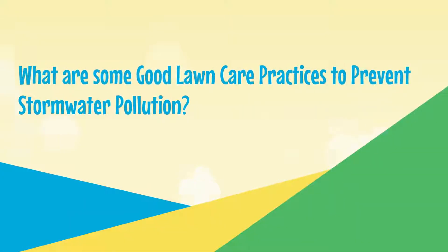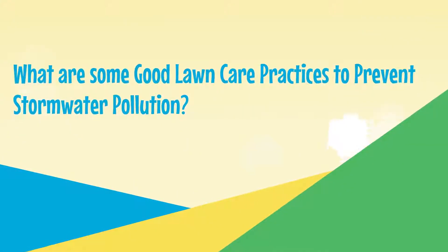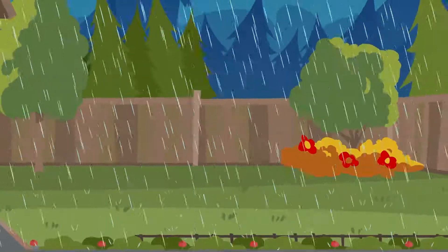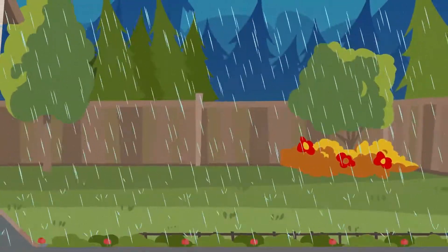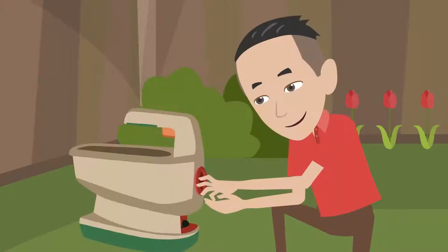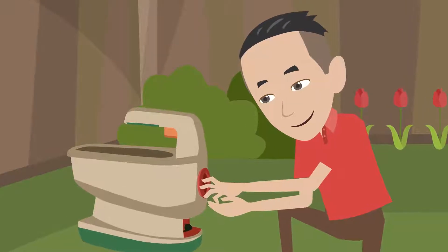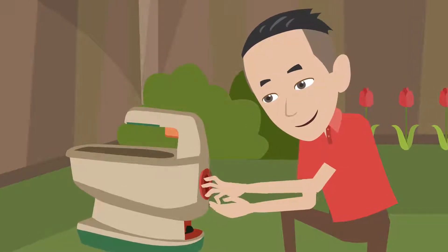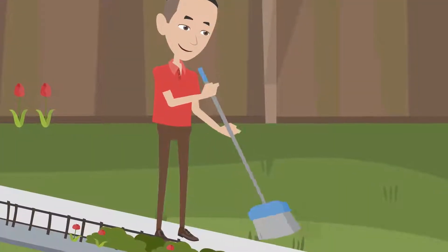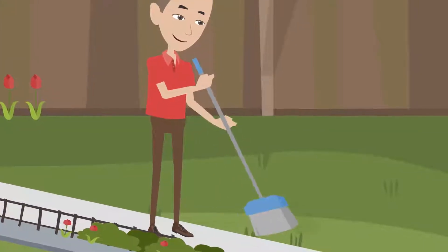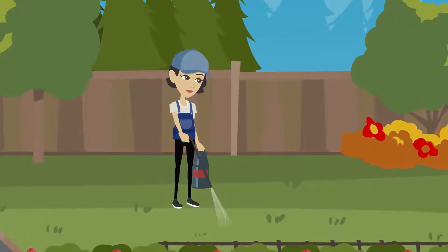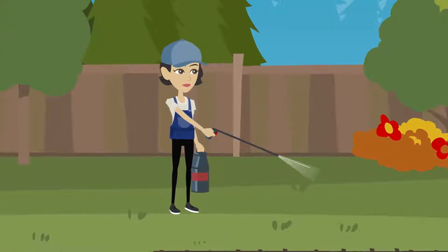What are some good lawn care practices to prevent stormwater pollution? Don't apply fertilizers or herbicides right before a rainfall event. Use correct fertilization equipment settings so there's no over-fertilization. Sweep excess fertilizers and grass clippings back onto the lawn. Spot spray herbicides rather than spraying the entire lawn.